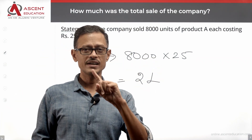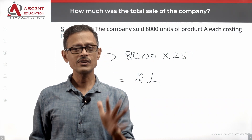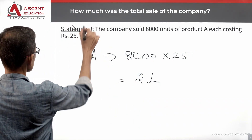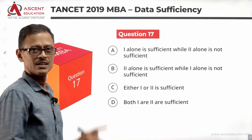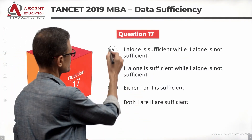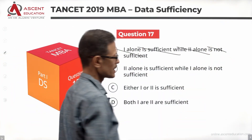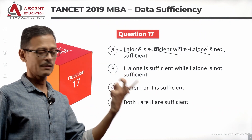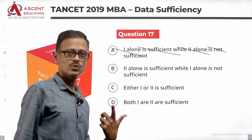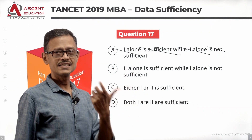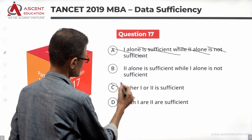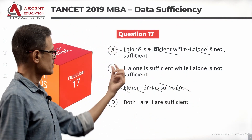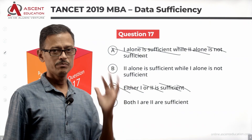Total sales from product A is 2 lakhs. But the company may have other product sales, so statement one alone is not sufficient. Let's rule out some answer options — one alone is not sufficient, so remove A. What else can be removed? Remove D as well. Either statement 1 or 2 alone being sufficient — that option is eliminated. Statement one alone is not sufficient, so C can also be eliminated. That leaves us with two options: B or D. Let's evaluate statement 2.